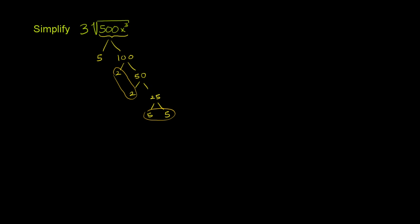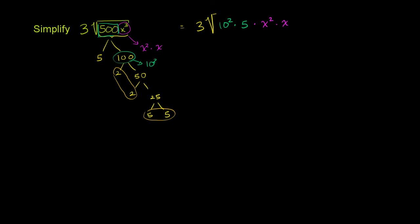And then x to the third is clearly the same thing as x squared times x, which allows us to break it down into a perfect square and something that is not a perfect square. So let's rewrite these numbers under the principal root sign. This is going to be equal to 3 times — I can rewrite 500 as 100 times 5, and 100 as 10 squared. So I'll write this as 10 squared times 5. That's the 500. And I can rewrite x to the third as x squared times x.